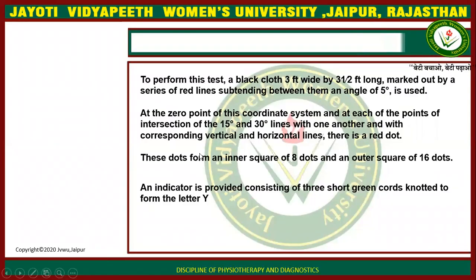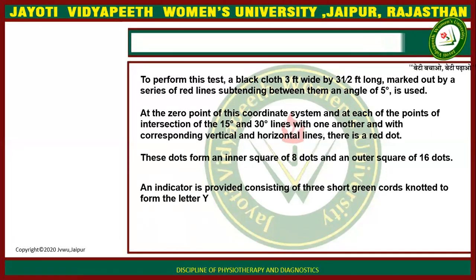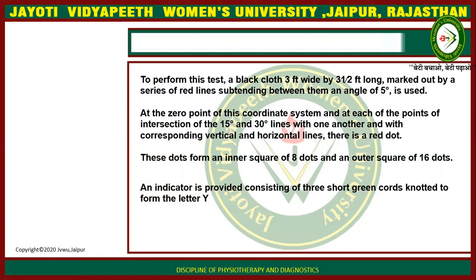This is a Hess screen board, with 16 dots — 8 inner and 8 outer. To perform this test, a black cloth 3 feet wide by 3½ feet long, marked out by a series of red lines subtending between them an angle of 5 degrees, is used. At the zero point and at each intersection of the 15 degree and 30 degree lines with vertical and horizontal lines, there is a red dot.